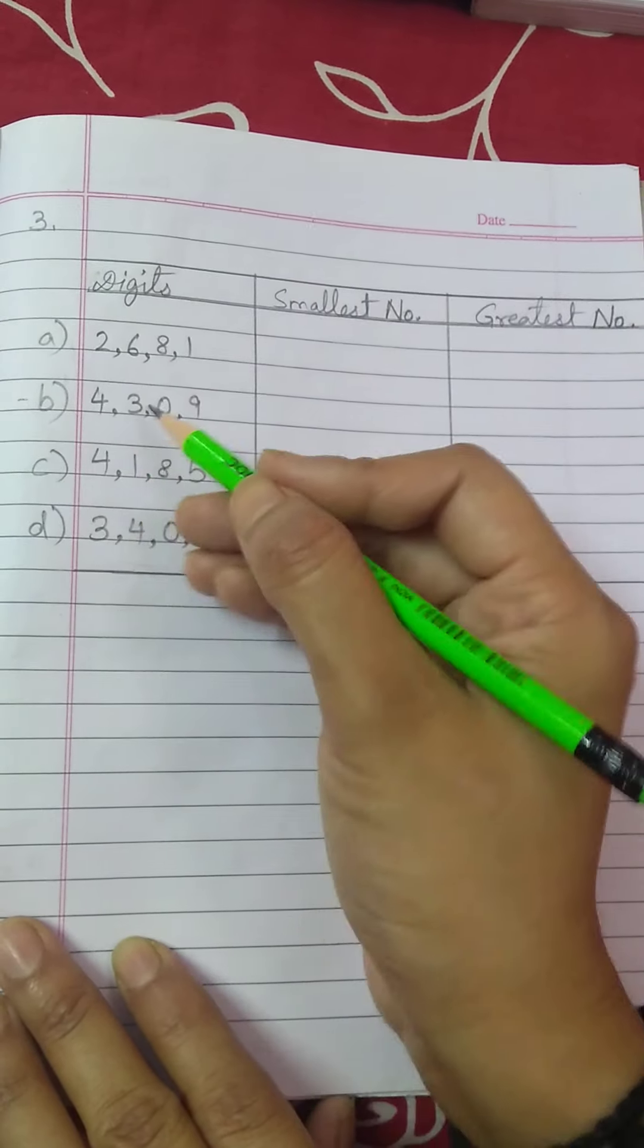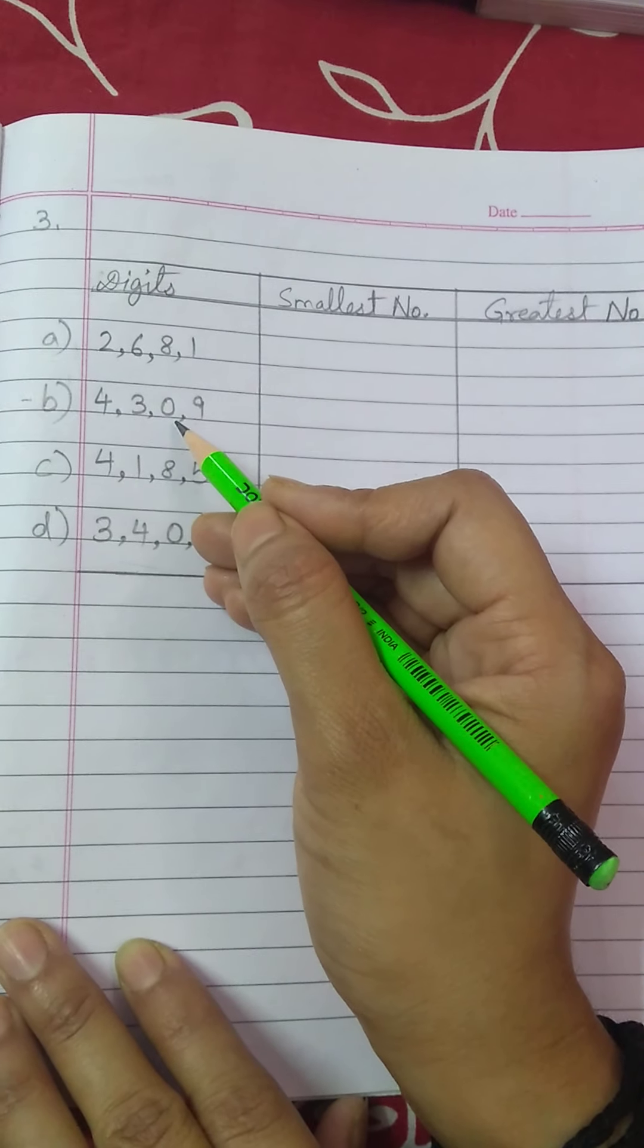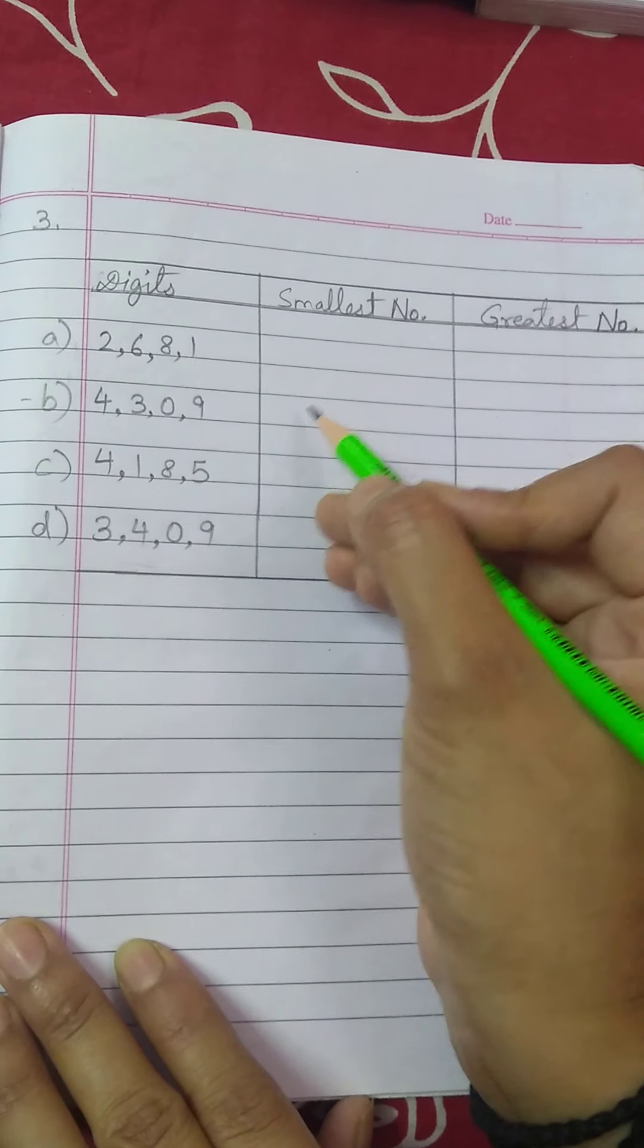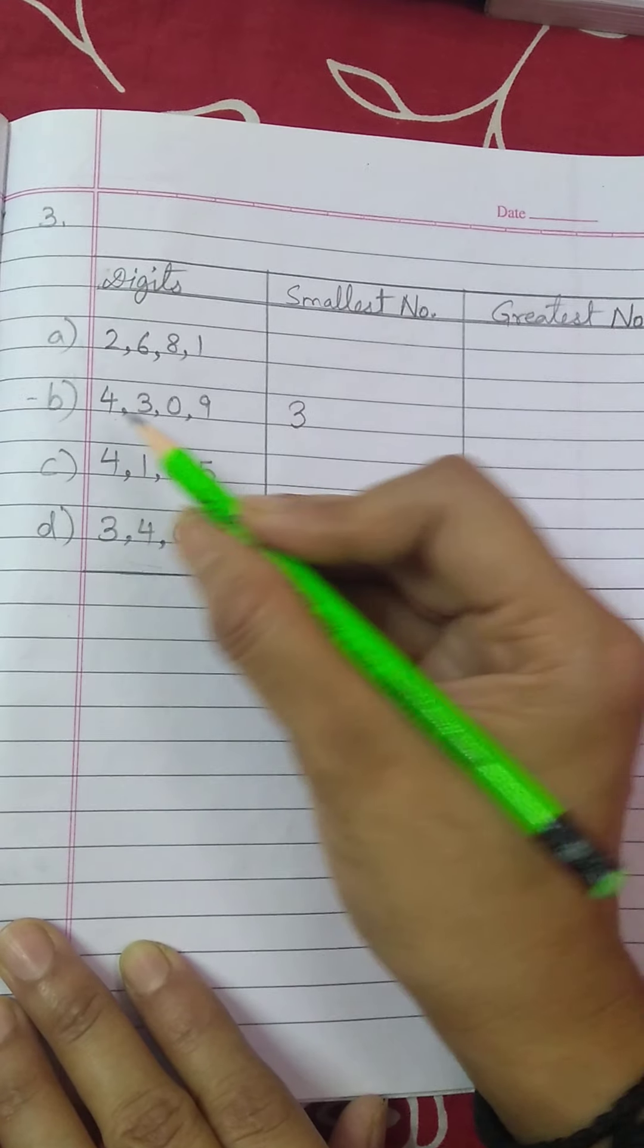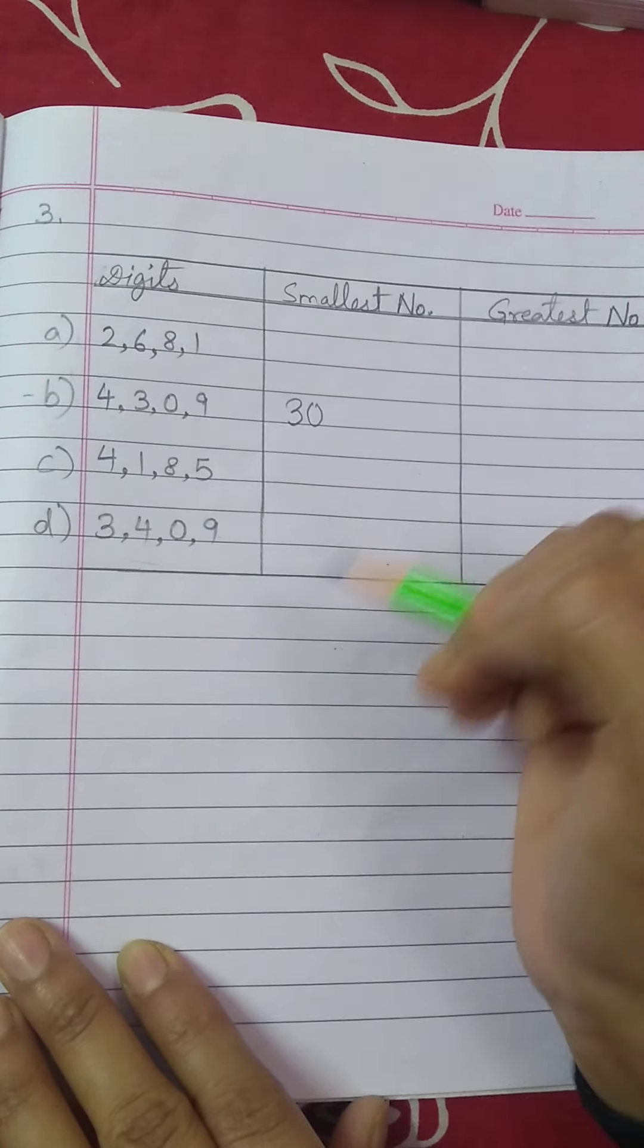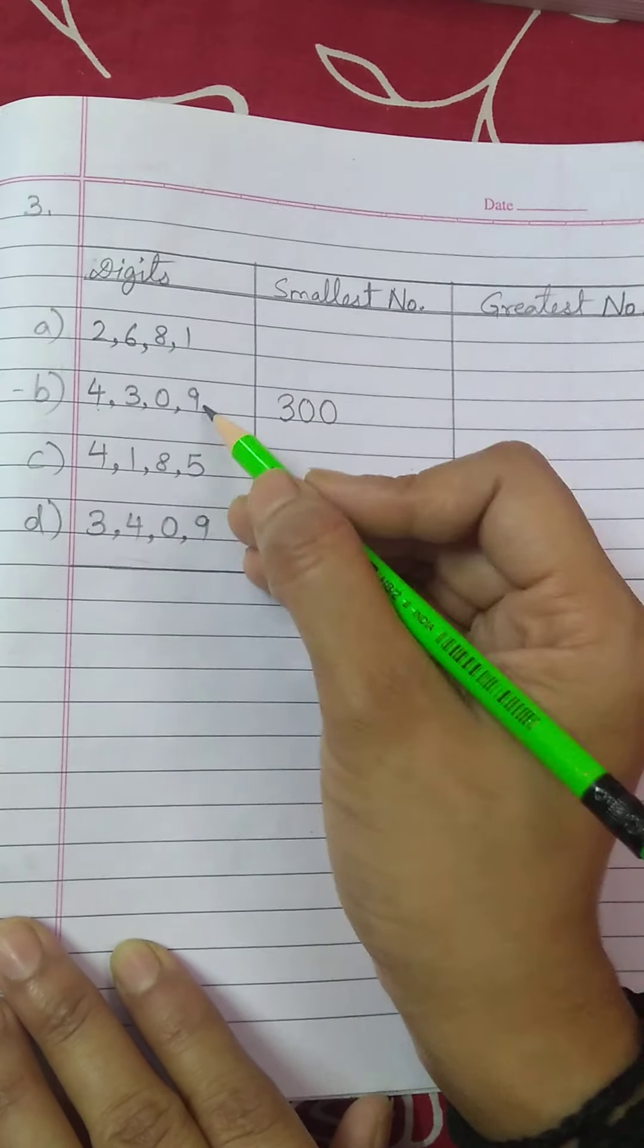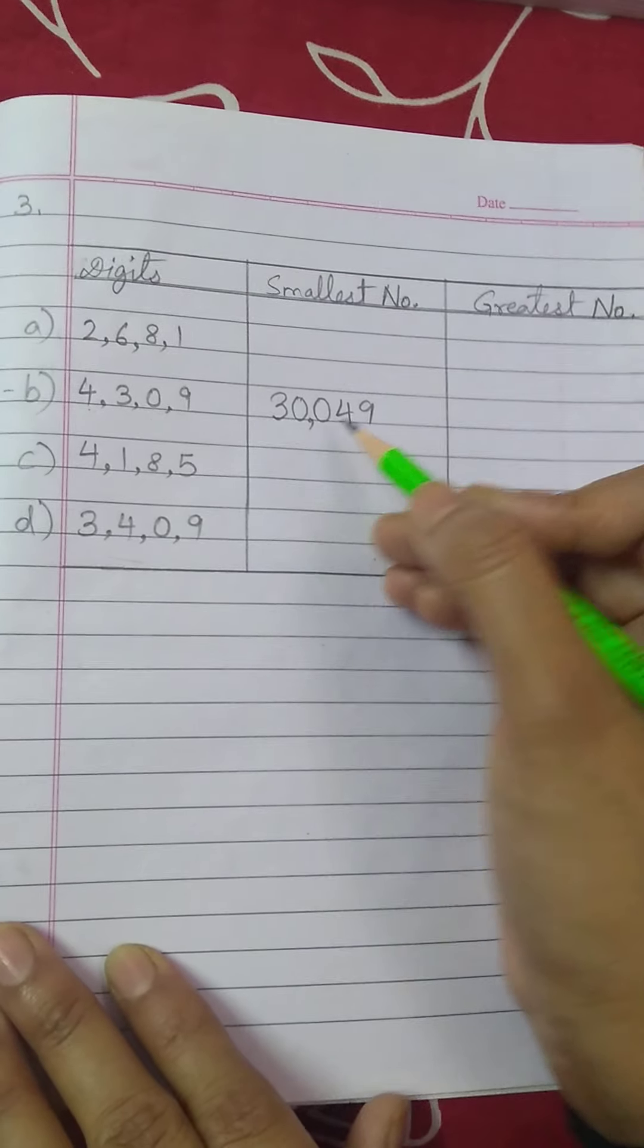Let us do B part. Here, 4, 3, 0, 9 are given. Smallest number banane ke liye inko ascending order mein place karenge, 0, 3, 4, 9. Aur maine aapko bataya, 0 se to start nahi karna, so, 3 se start karenge, 3. Ek extra hume digit badhana hai, right? To woh kaun sa hoga? Sabse chhota hai, sabse chhota 0 hai na, to 0 ek baar to likhna hi hai hume, 3 ke baad, ek aur baar 0 aayega, right? After that, kaun sa number aayenge? 3, 0 ke baad, 4, 9. This is how you will make the 5 digit number, smallest 5 digit number.